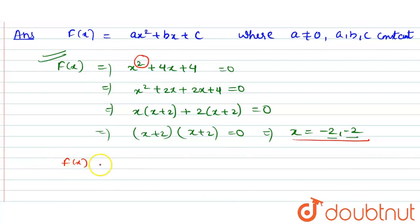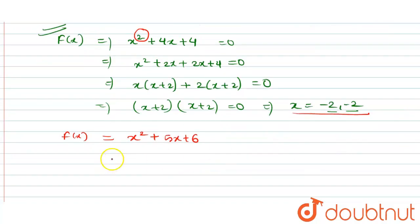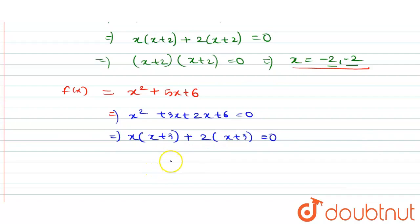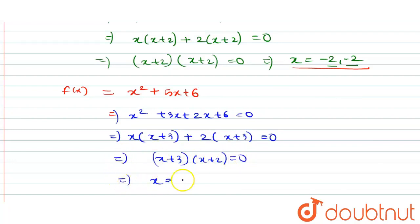Now we'll find out for a different function f(x) having distinct zeros. Let us take the example x² + 5x + 6. Solving using the middle term splitting method: x² + 3x + 2x + 6 = 0. From the first two terms take x common giving (x + 3), from the next two terms take 2 common giving (x + 3). Taking (x + 3) common gives (x + 3)(x + 2) = 0.